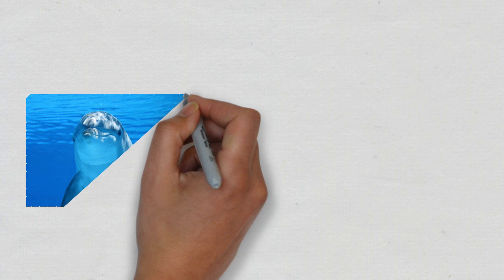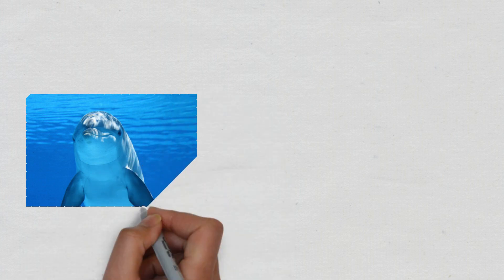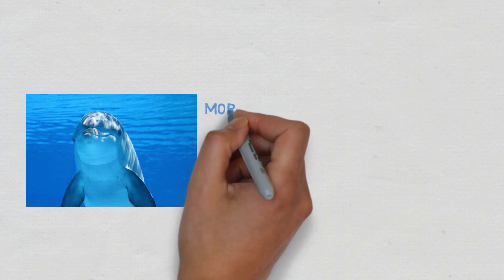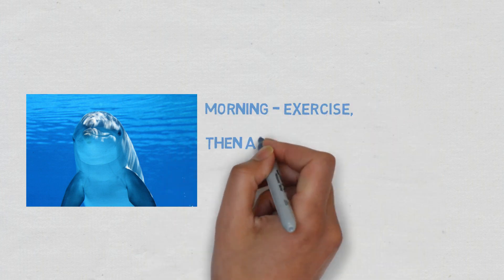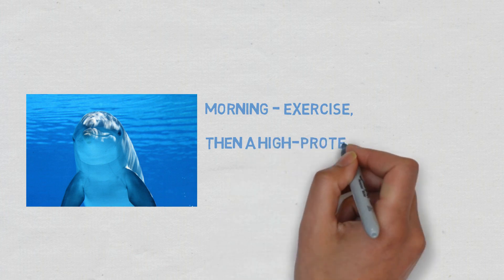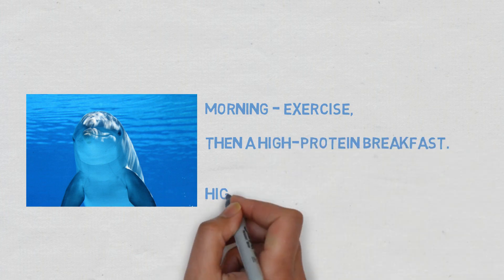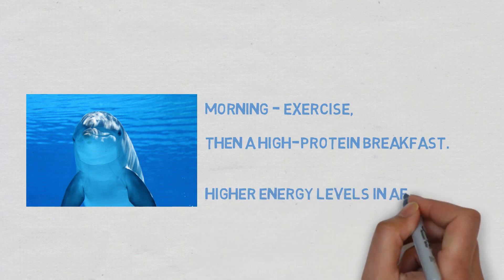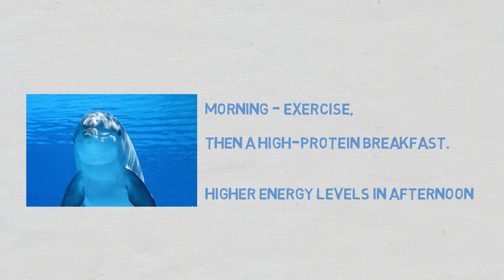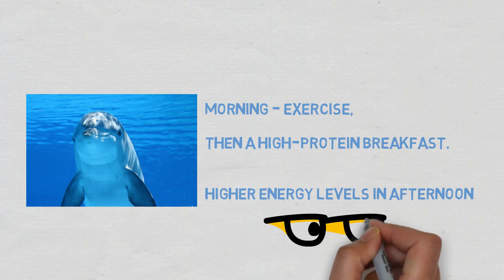Now looking at dolphins, who are more prone to restless sleep and insomnia. The ideal routine for dolphins will consist of exercise first thing in the morning, thereafter having a high-protein breakfast afterwards, similar to bears. Dolphins' energy levels will rise in the afternoons, and this is actually the more ideal time than say in the mornings for dolphins to do tasks that may require deep concentration.